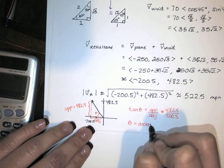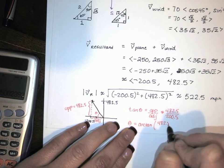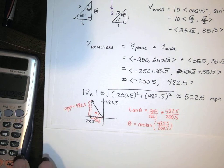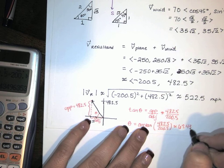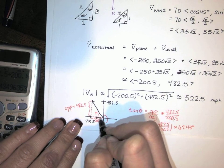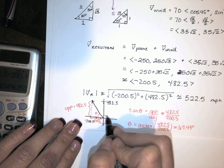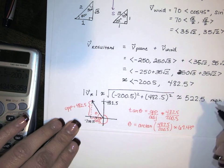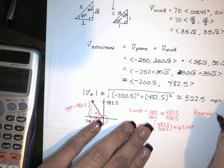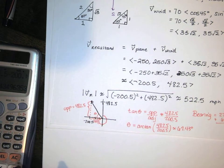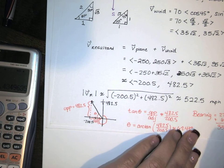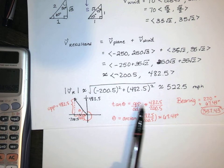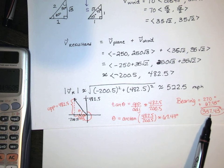So theta is the inverse tangent of 482.5 over 200.5. In degree mode, I get 67.43 degrees — that's that angle. The bearing is that angle plus 90 plus another 90 plus another 90, so it's that angle plus 270 degrees. Our bearing is 270 plus 67.43, which is 337.43 degrees. So we have a speed of 522.5 miles per hour at a bearing of 337.43 degrees.